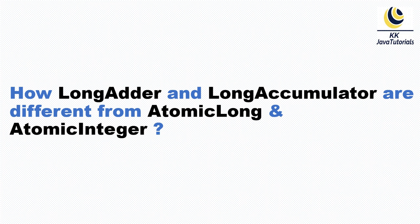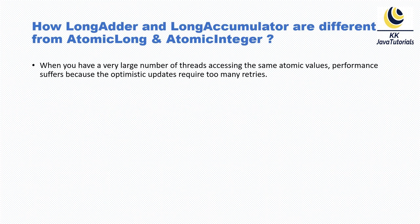Let's try to answer this question step by step. The first point says: when you have a large number of threads accessing the same atomic values, performance suffers because optimistic updates require too many retries.